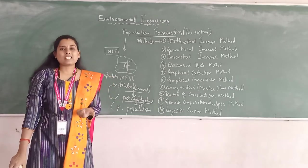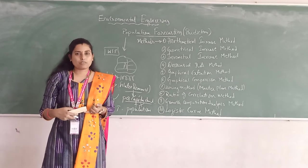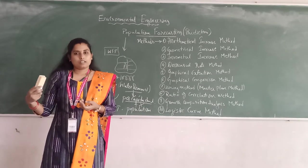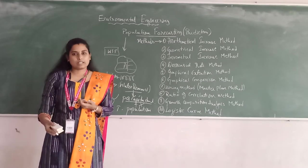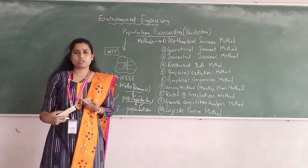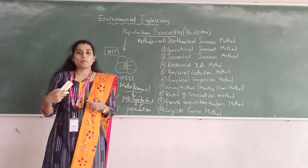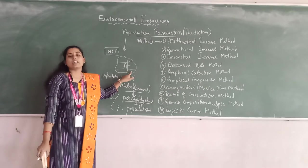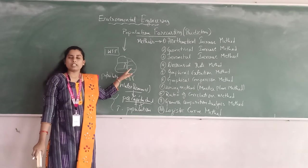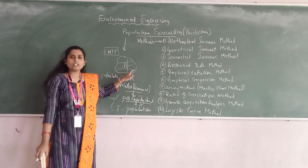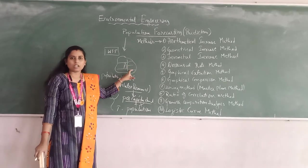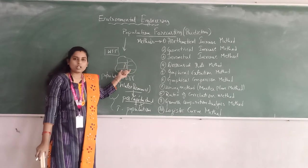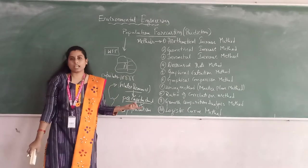We know that there are various types of water demand: domestic water demand, institutional water demand, commercial water demand, and water that has been lost. Whether the city is an industrial area, a residential area, or a commercial area — by considering all the water demands including fire demand, we are going to conclude one per capita demand.